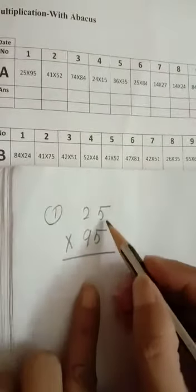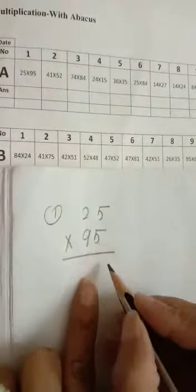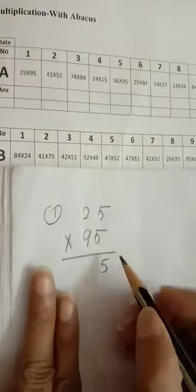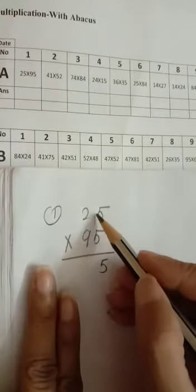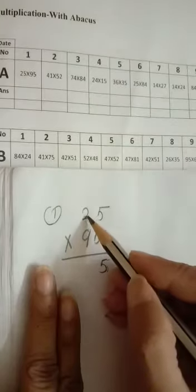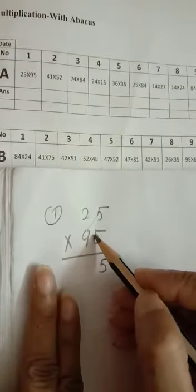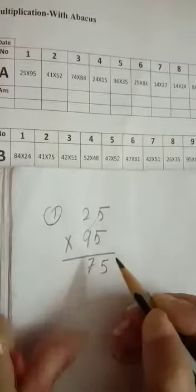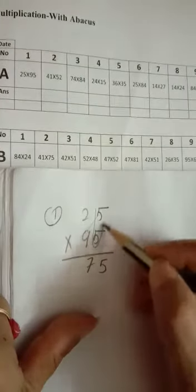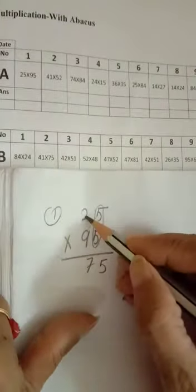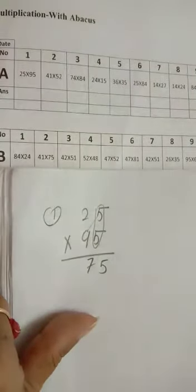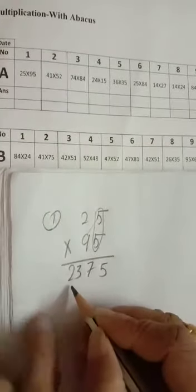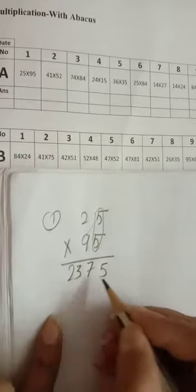First is I×I formula. That means 5×5=25, write 5 carry 2. Now criss cross: 9×5=45 and 2×5=10, 45 plus 10=55 plus 2=57, write 7 we have carry 5. Now leave this one row: 9×2=18, 18 plus 5=23. Your answer will be 2375.